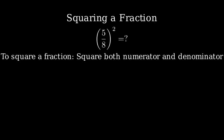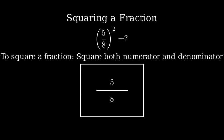Let's visualize this with a diagram. Here we have our original fraction, 5 eighths. When we square it, we square both 5 and 8 separately.